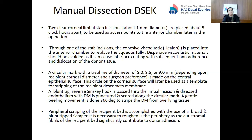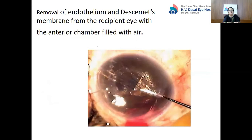A blunt-tip reverse Sinskey hook is passed through the limbal incision and the diseased endothelium with DM is punctured. A circular groove is made first all along 360 degrees, and then with gentle peeling movements, 360-degree peeling of Descemet's membrane from the overlying stroma is done. Peripheral scraping of the recipient bed is accomplished with a broad and blunt scraper. It is necessary to roughen the periphery to cut the stromal fibrils of the recipient bed, as this significantly contributes to donor lenticule adhesion.